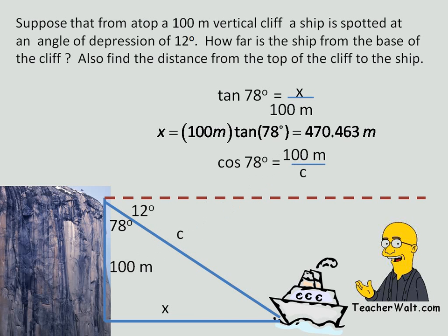Now, this time, we've got our variable on the bottom, but we can still solve that with a little bit of basic algebra by cross-multiplying, and we find that c equals 100 meters over cosine 78, and that is 480.973 meters.